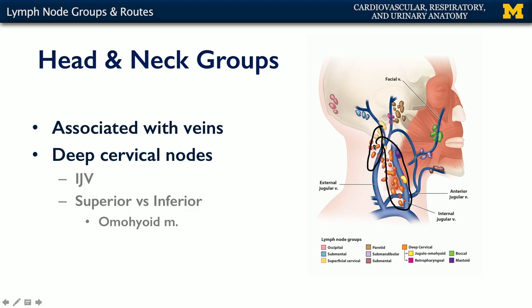These deep cervical nodes are divided into superior and inferior groups by where they cross the omohyoid muscle. Most of the lymphatics from the head and neck travel from the deep cervical superior group to the inferior group, then coalesce in the IJV trunk, which feeds into one of the two ducts, descending the neck into that IJV trunk eventually.